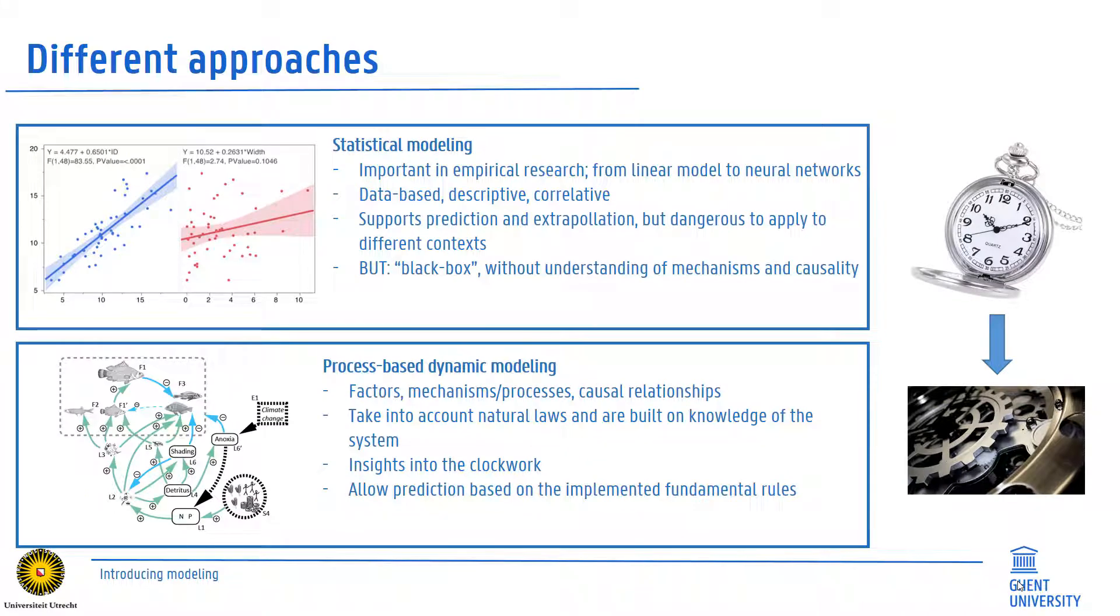We typically separate two types of mathematical models. First, statistical modeling. This is all well known by you, and it is essentially correlating observed data with some predictions based on their expected distribution. They are thus descriptive and only relevant to the domain where the data were collected.